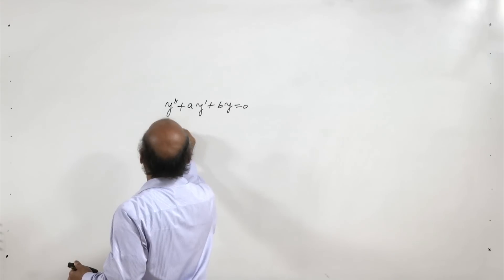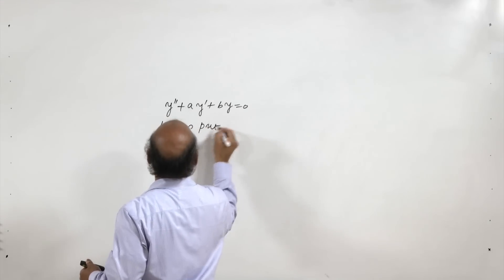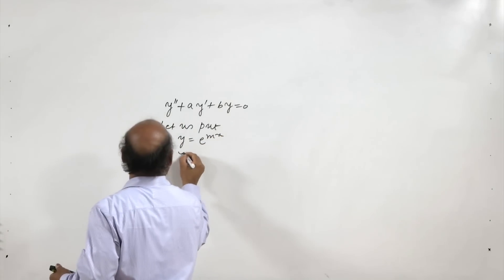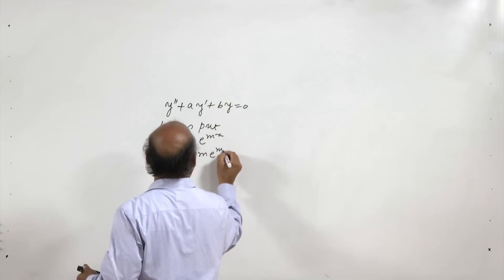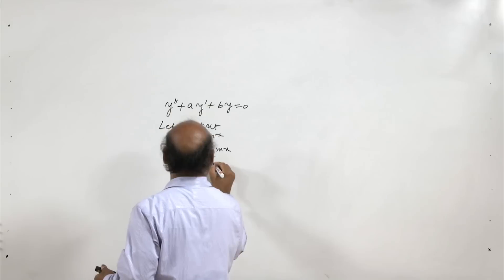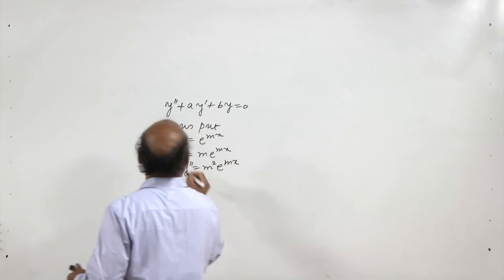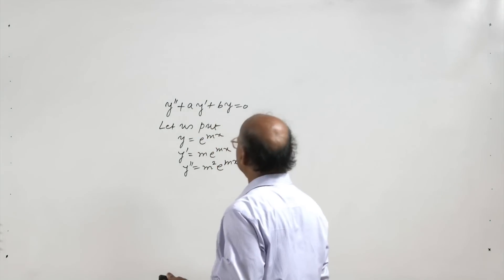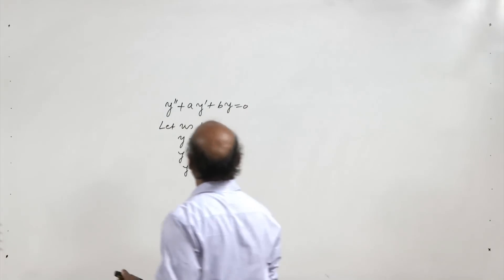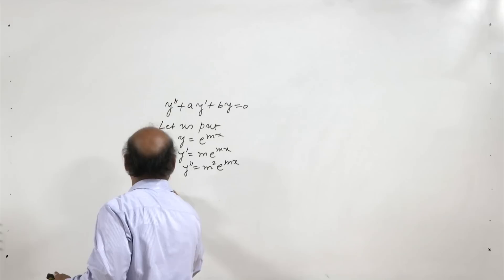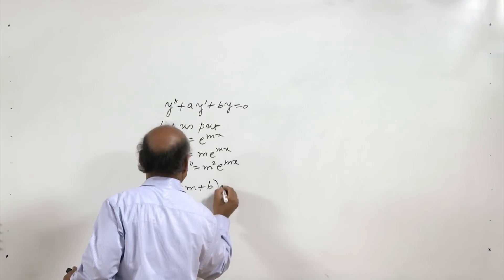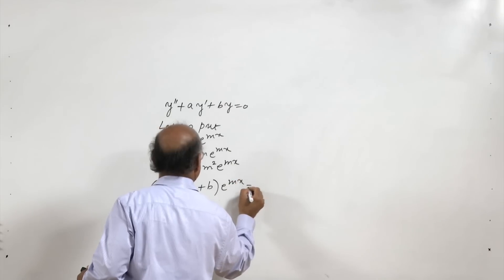Putting y = e^(mx), we get y' = m·e^(mx) and y'' = m²·e^(mx). Substituting the values of y, y', and y'' into the equation y'' + a·y' + b·y = 0, we get (m² + am + b)·e^(mx) = 0.